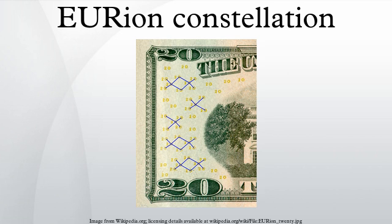The Orion Constellation is a pattern of symbols incorporated into a number of banknote designs worldwide since about 1996. It is added to help imaging software detect the presence of a banknote in a digital image. Such software can then block the user from reproducing banknotes to prevent counterfeiting using color photocopiers.